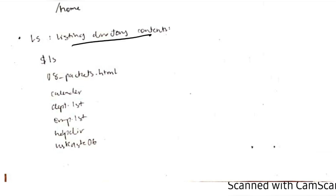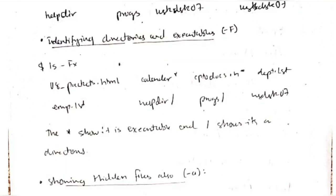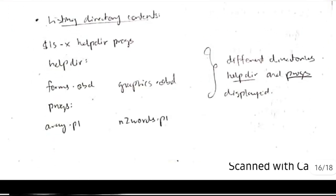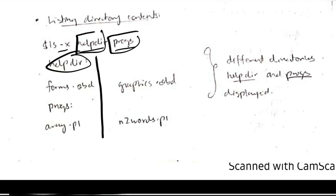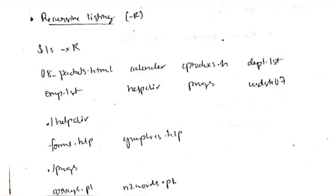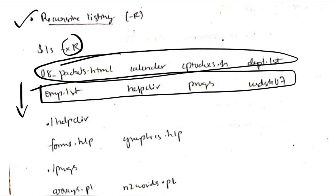'ls' lists the directory contents. We can display in various options — if I write 'ls -x', it will represent as separate lines. If I write 'ls -Fx', it will show only executable files. Hidden files can also be seen using 'ls -a' — they are represented by a dot and are not visible if we access directly. If I want to list and separate directory contents, we can use 'ls' with specific directory paths — different directories are displayed under helpdir and progs. Recursive listing means first go to the parent directory, then recursively go to all subdirectories.